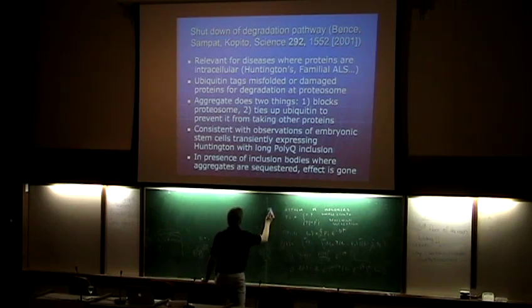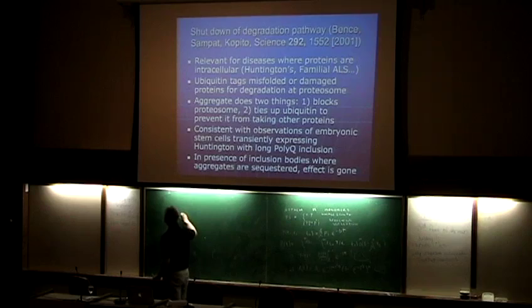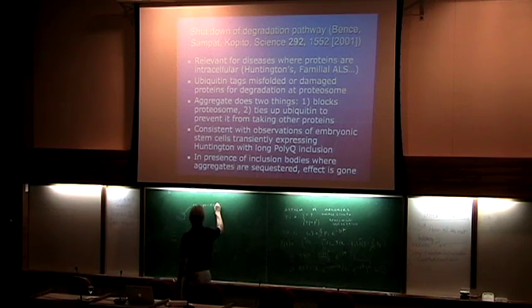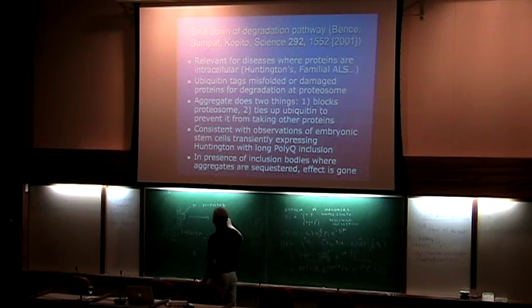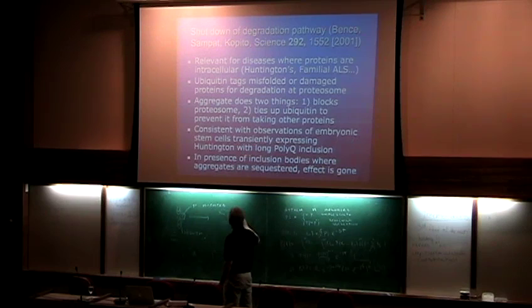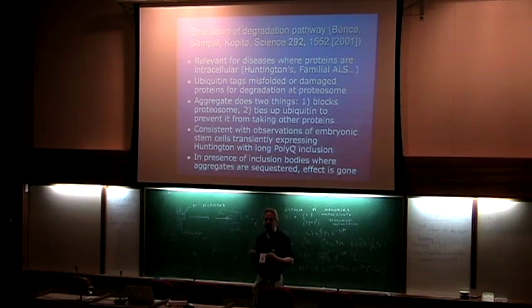What happens is if a protein has been misfolded, it will be dressed up with ubiquitin protein. Once dressed up with ubiquitin, it's transported over to what I call the protein garbage disposal - the proteasome. It's fed into the proteasome and you get amino acids out the other end. So it's a way for the cell to clear away misfolded proteins.